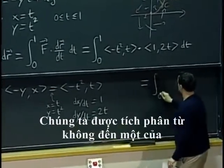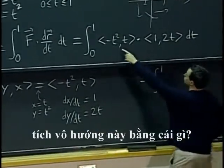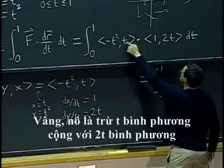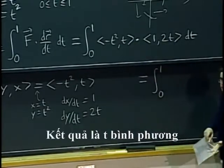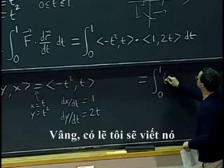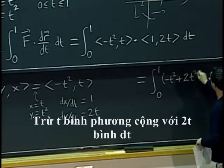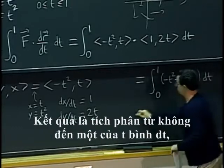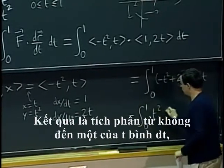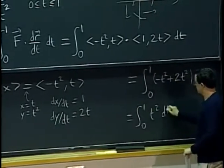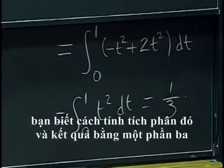We have to continue the calculation. We get the integral from 0 to 1 of the dot product, which is negative t squared plus 2t squared dt. That simplifies to the integral from 0 to 1 of t squared dt.